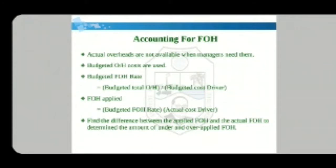Accounting for factory overhead: whenever managers require actual overhead, it is not available at the time needed, so budgeted overhead costs are used instead. The budgeted overhead rate is calculated based on budgeted total overhead divided by budgeted cost driver. Applied overhead then depends on the budgeted overhead rate multiplied by the actual cost driver. The difference between applied and actual factory overhead determines the amount under- or over-applied.